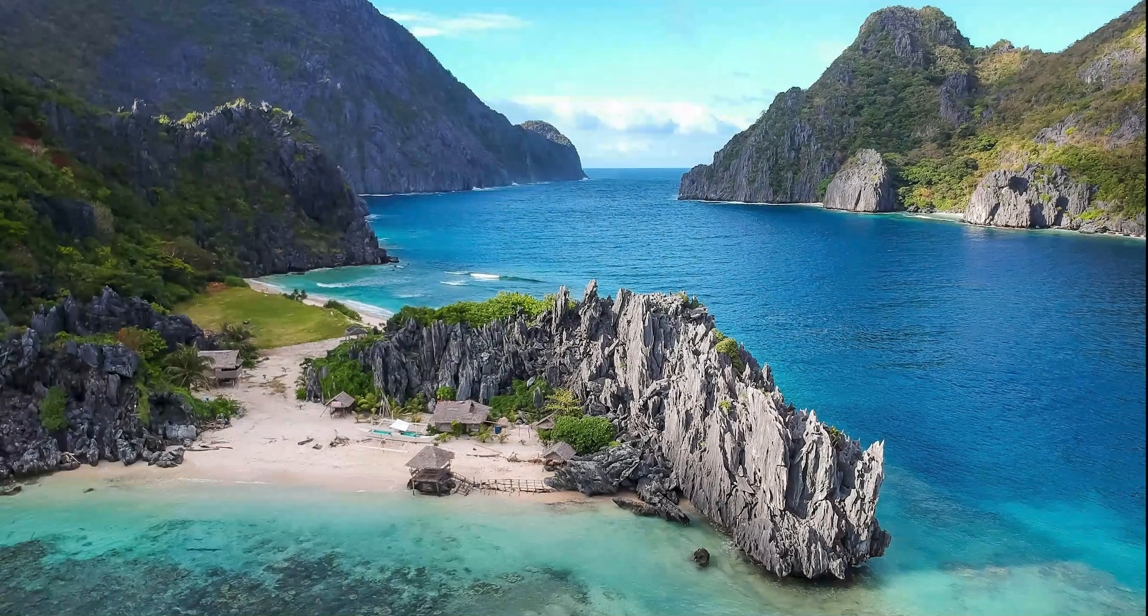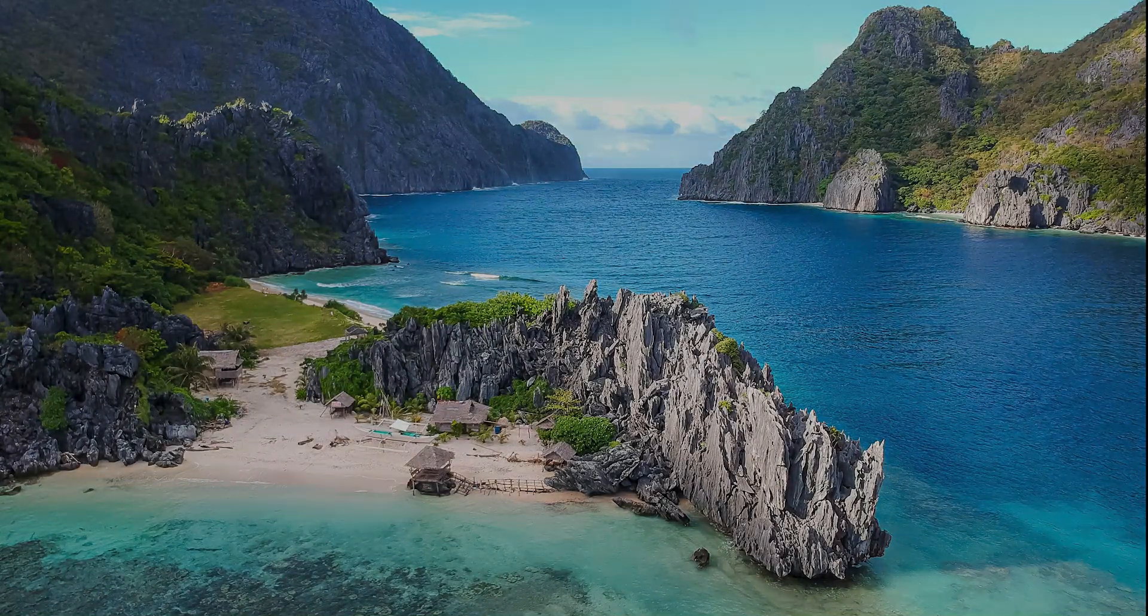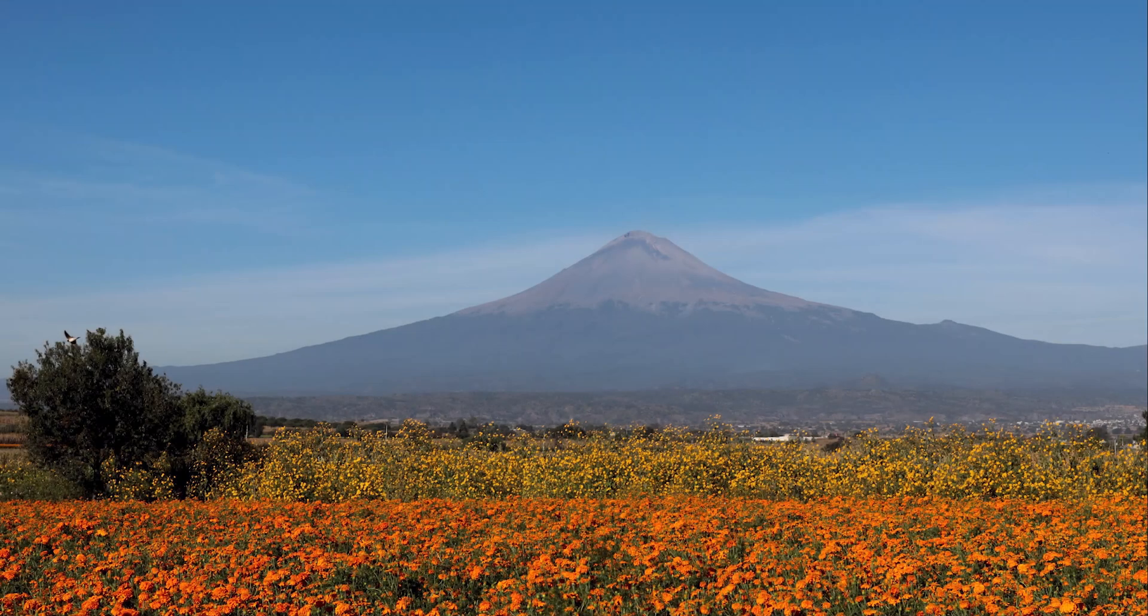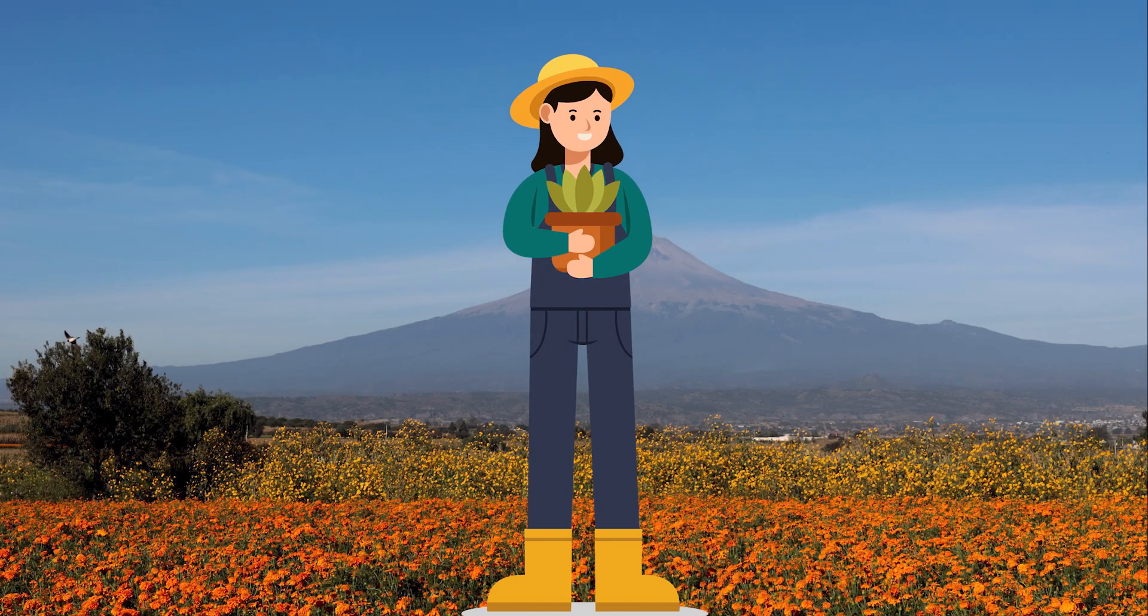To help explain how artificial neural networks work, let's go back to the island of Aramamore. On the island, there is a neighboring farm to farmer Jack's, owned by farmer Rose.